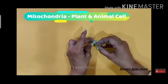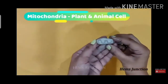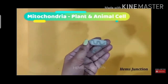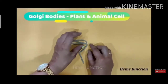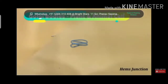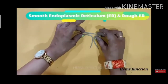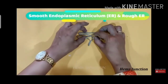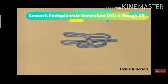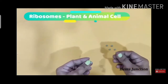After the chloroplast, the next one is the mitochondria. You will make cristae inside the mitochondria by rolling the clay. Next is the endoplasmic reticulum — both rough endoplasmic reticulum and smooth endoplasmic reticulum. After that, you will make the ribosomes — this is the way of making the ribosomes.